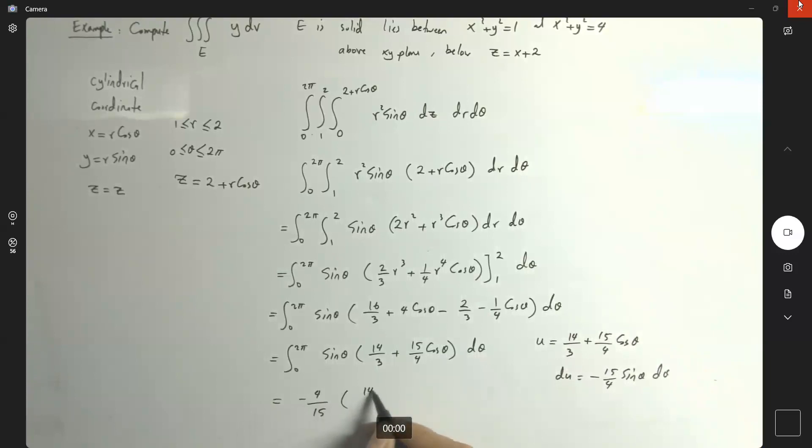And here you have 14 over 3. And you have power 2 as well, am I right? Or you can just use this. You have a half 14 over 3 plus 15 over 4 cosine theta to the second power 0 to 2 pi. Well, if you simplify this, your output is equal to, let's see. What do we get here?